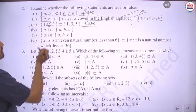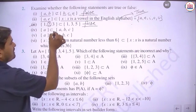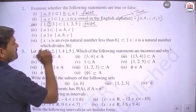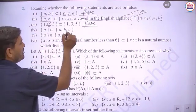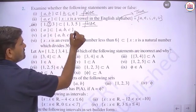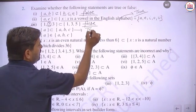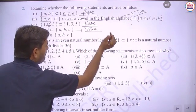Fourth part: {A} is a subset of {A, B, C}. Element A is present in {A, B, C}, so this is true.